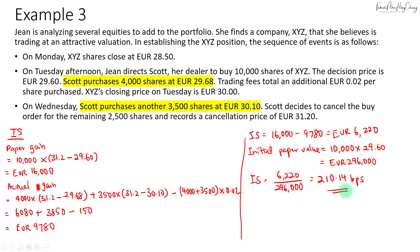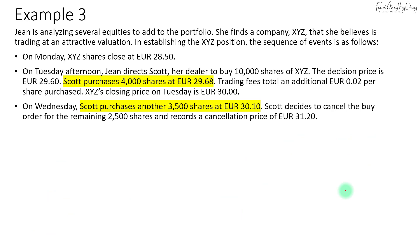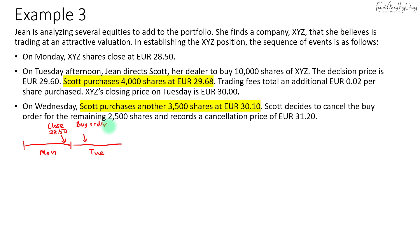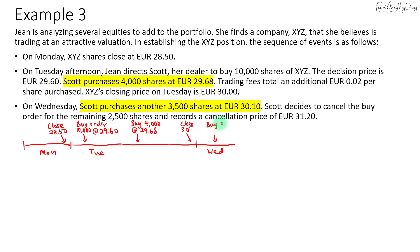Now let's calculate the individual components and reconcile back to this figure. Drawing out the timeline: on Monday, XYZ shares closed at 28.50. On Tuesday, Gene put in a buy order for 10,000 shares at the decision price of 29.60. Scott managed to buy 4,000 shares at 29.68, and the price closed at 30 at end of Tuesday. On Wednesday, Scott bought another 3,500 shares at 30.1 before the order was cancelled at 31.20.